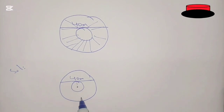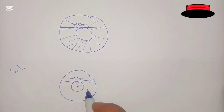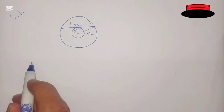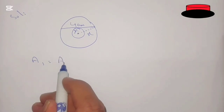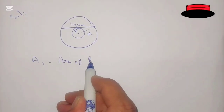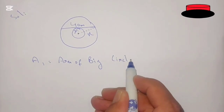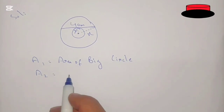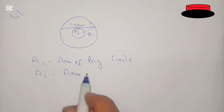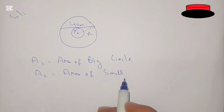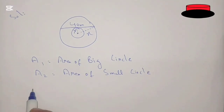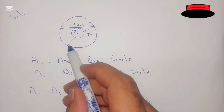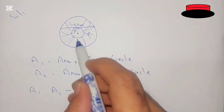Now, let's say x is the diameter of the large circle and y is the diameter of the small circle. We can find the area of the big circle as A1 and the area of the small circle as A2. The area of the shaded region is then A = A1 minus A2, that is, the area of the big circle minus the area of the small circle.